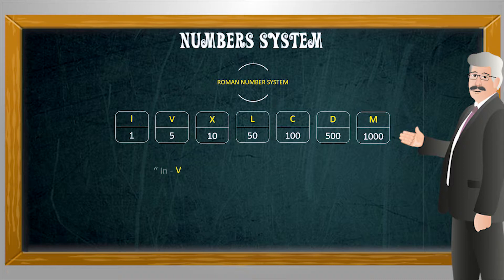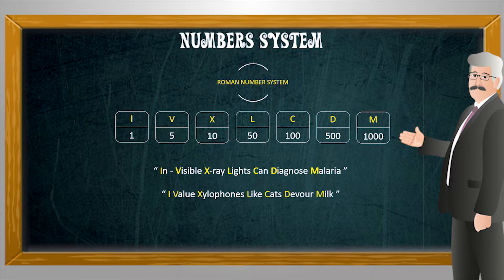You can learn these symbols and their values very easily using mnemonics like 'Invisible X-Ray Lights Can Diagnose Malaria' or 'I Value Xylophones Like Cats Devour Milk.' Good thing about these mnemonics is that these symbols are placed in ascending order of their values.